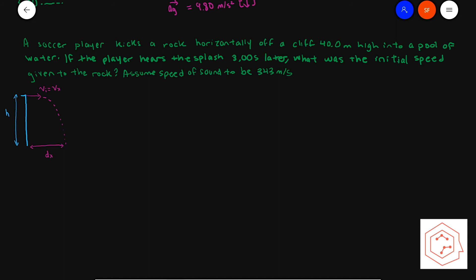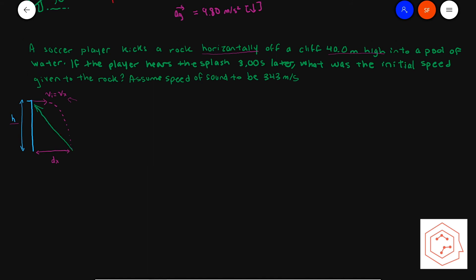Since the rock was kicked horizontally off the cliff, the initial velocity is only in the x direction. The cliff is 40 meters high (variable h). The fastest possible time the player hears the sound is if it travels the shortest distance through the air — the diagonal, represented by variable r. We know that r equals the speed of sound times time, but we don't know how long the sound traveled.